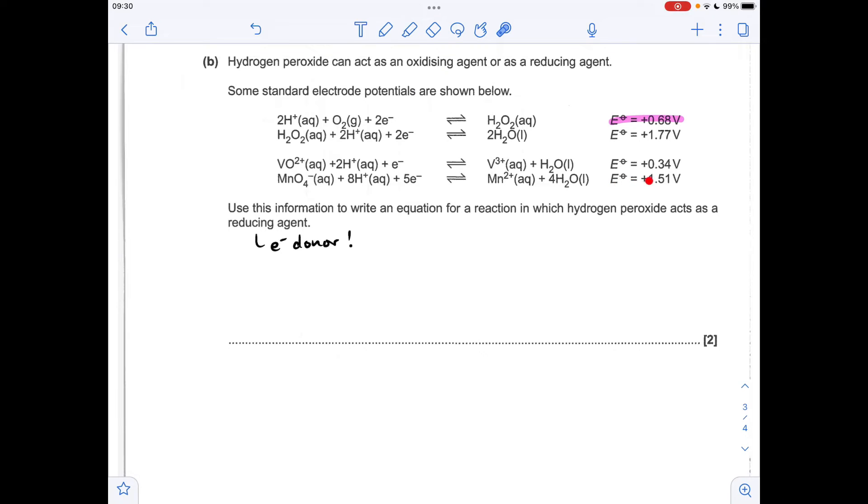So if you think about it, this is plus 1.51 volts. So that will run in the forwards direction, and that one will run in reverse. Obviously the hydrogen peroxide is going to be donating electrons in the process.